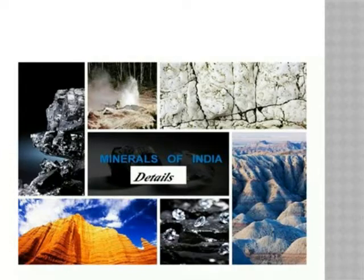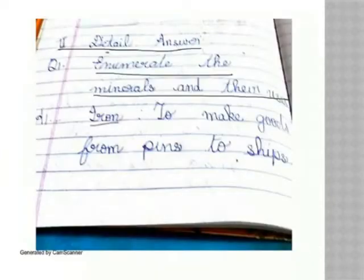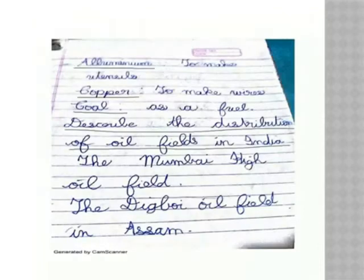The Minerals of India. Social Studies lesson. Question 1: Enumerate the minerals and their uses. Iron — to make things from pins to ships. Aluminium — to make metals. Copper — to cast them. Coal — as a fuel.